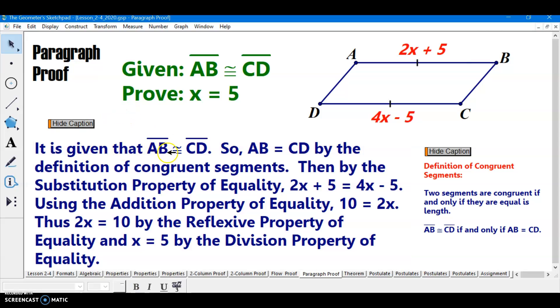So it is given that segment AB is congruent to segment CD. So then I can write that AB equals CD. The distance from A to B equals the distance from CD. Figures are congruent, but their measures might be equal. These are their measures. That's the distance from A to B. That's the length of segment AB. That's the length of segment CD. They're equal in length. And that's the definition of congruent segments. It allows me to switch from this congruent statement to this equals equation. It's an equation that has an equal sign.